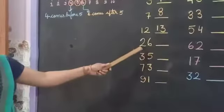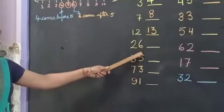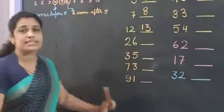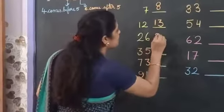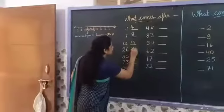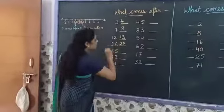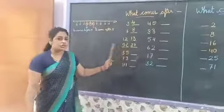And next number is 26. What comes after 26? 2, 7 — that is 27. So 26 after is 27.